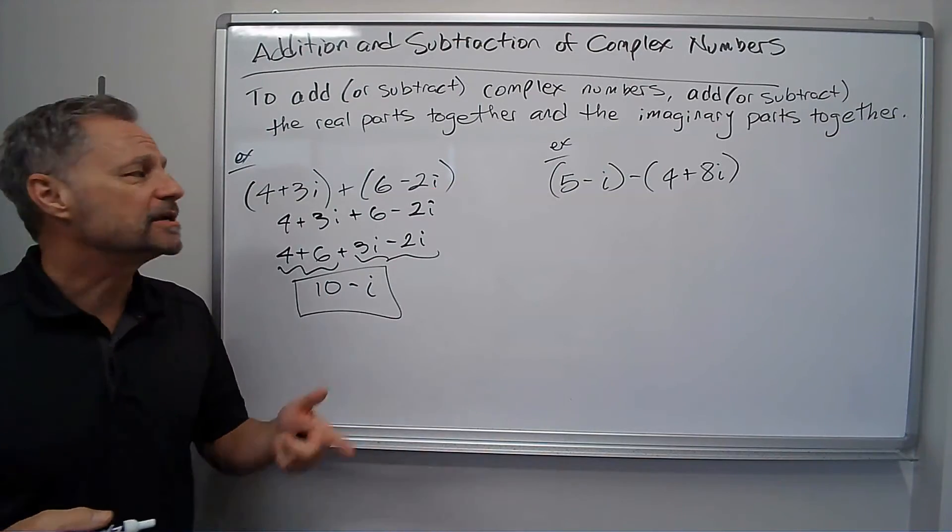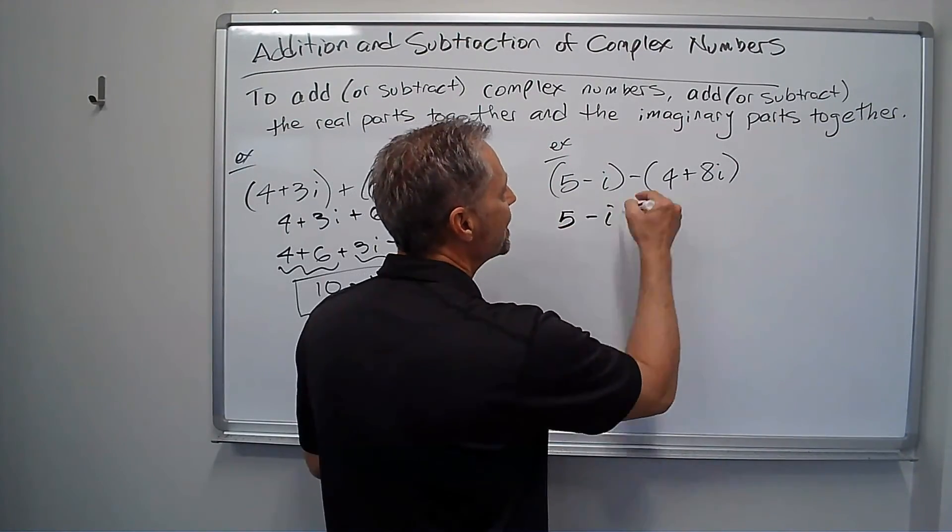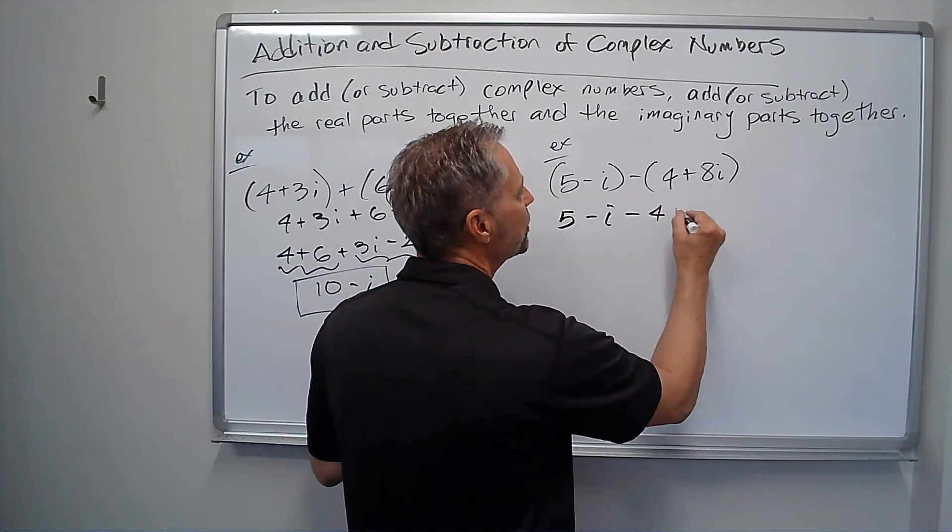Subtraction works similarly, we just need to distribute the negative sign. So I've got 5 minus i, and distributing this, I'll get minus 4 minus 8i.